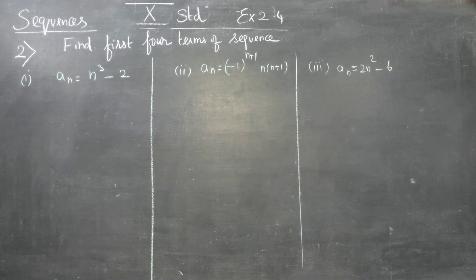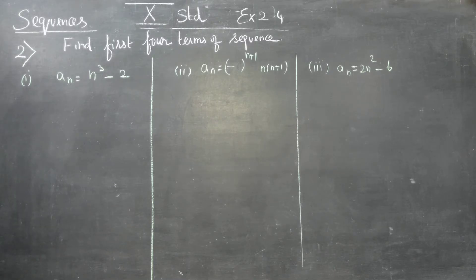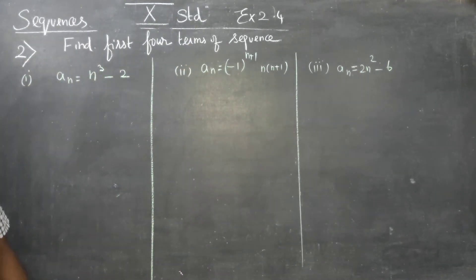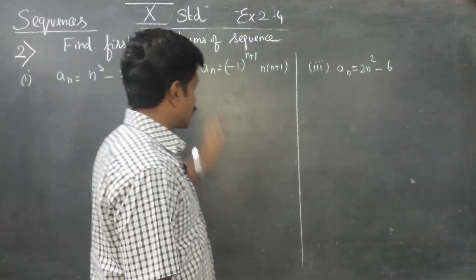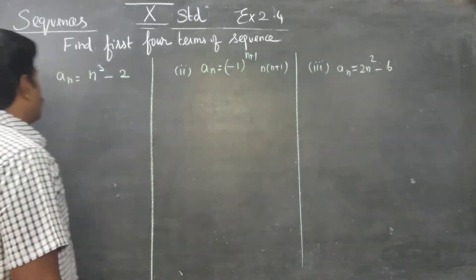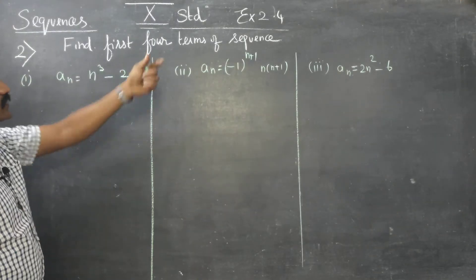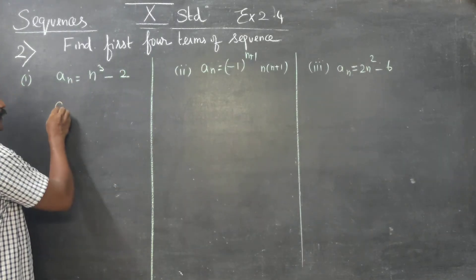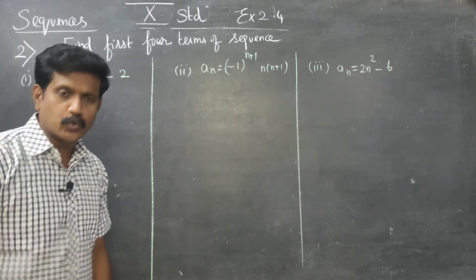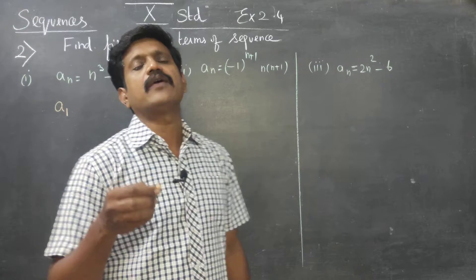Standard students, in exercise number 2.4 on sequences, we are going to find the first four terms of the sequence. The sequences are denoted by A1, A2, A3, A4.